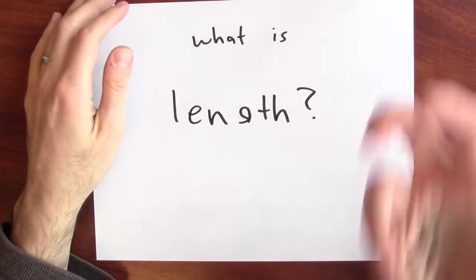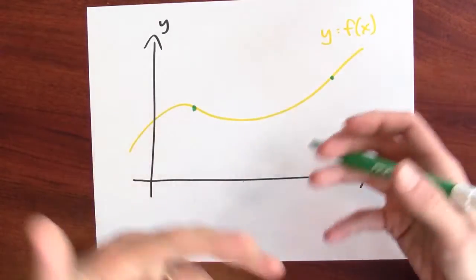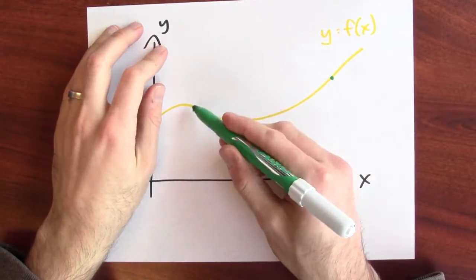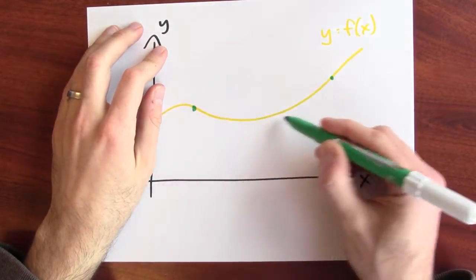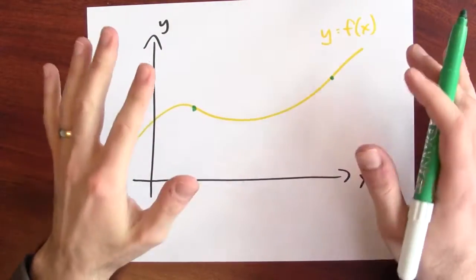The point is that even something as seemingly obvious as length is more subtle than I think we give it credit for. What we really need is some sort of definition of length. We'll do it in terms of an integral. So, just like with volume or with area, I'm going to take this thing that I'm interested in, say the length here, and try to break it up into little pieces that I'll then add up with an integral.